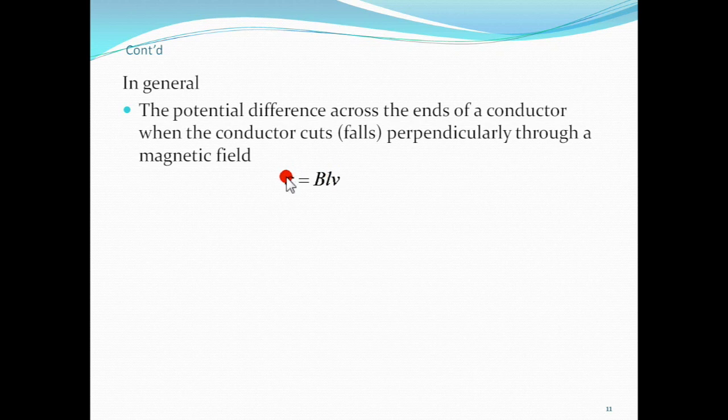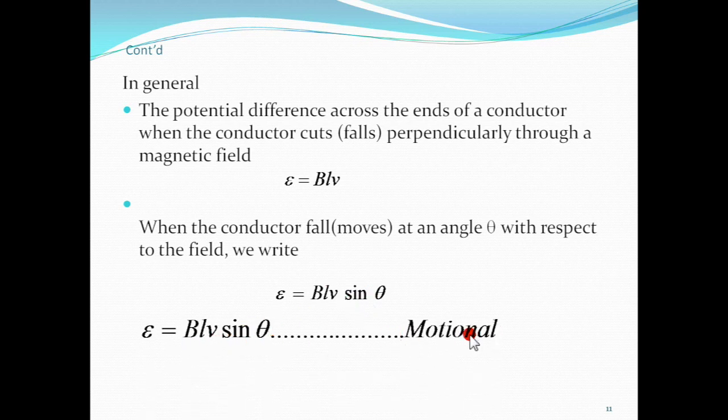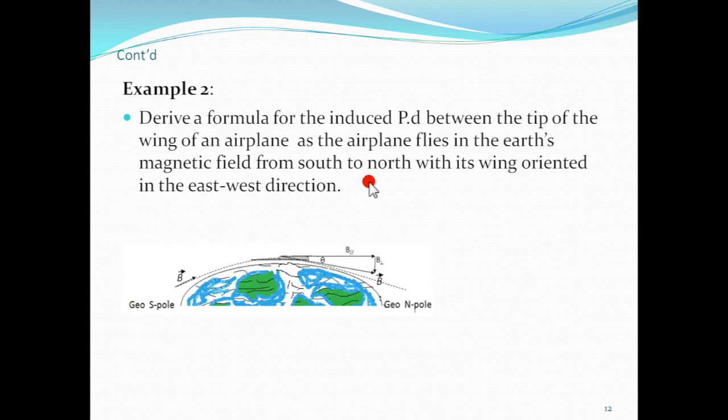In general, the potential difference across the ends of a conductor when the conductor cuts through a magnetic field is epsilon equals B L V. When the conductor moves at an angle theta with respect to the field, we write epsilon equals B L V sin theta. This is the motional EMF. The angle theta is the angle between B and V.